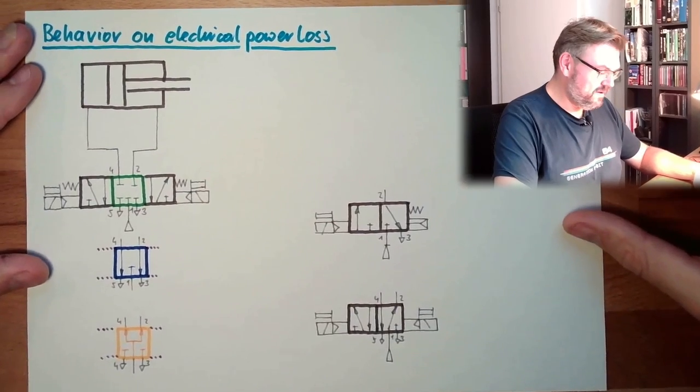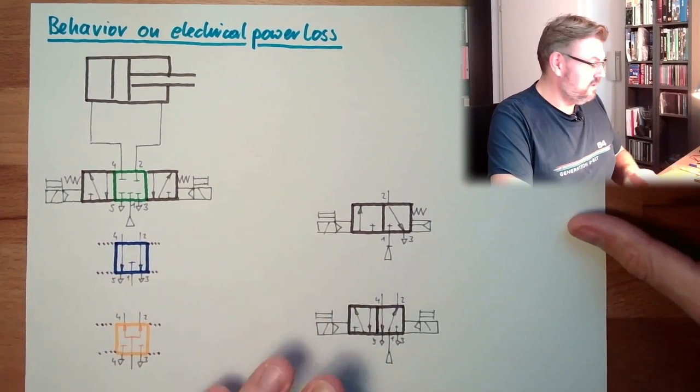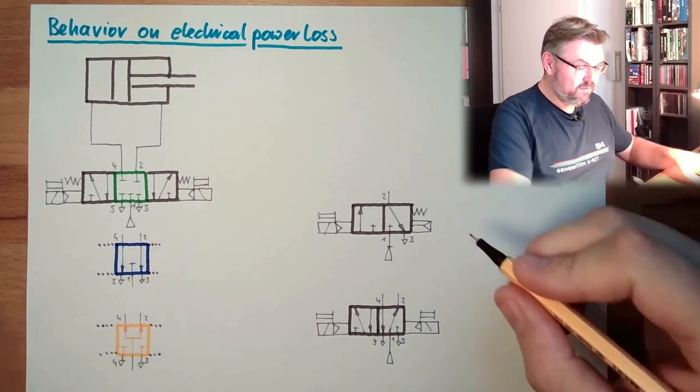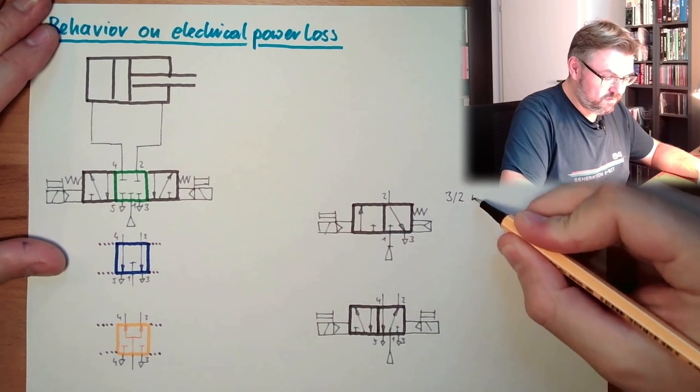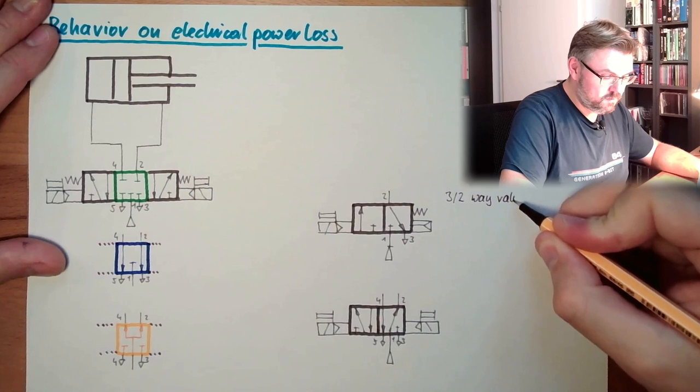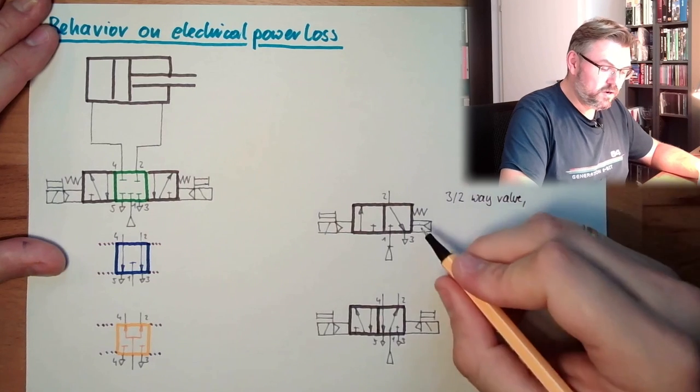So which valves do we have? Let's start here. So this is a 3-2 way valve, this one, 3-2 way valve, spring-loaded.